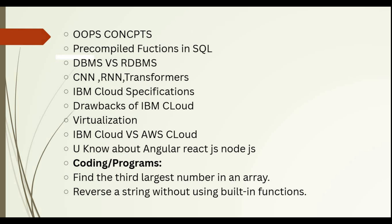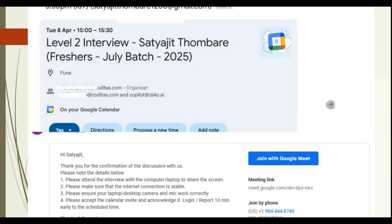She also asked whether I know Angular JS, React JS, or Node JS. I said I don't know much about those. Then there were two coding problems: find the third largest number in an array — code this and give the time complexity — and reverse a string without using built-in functions. I solved both in Python.